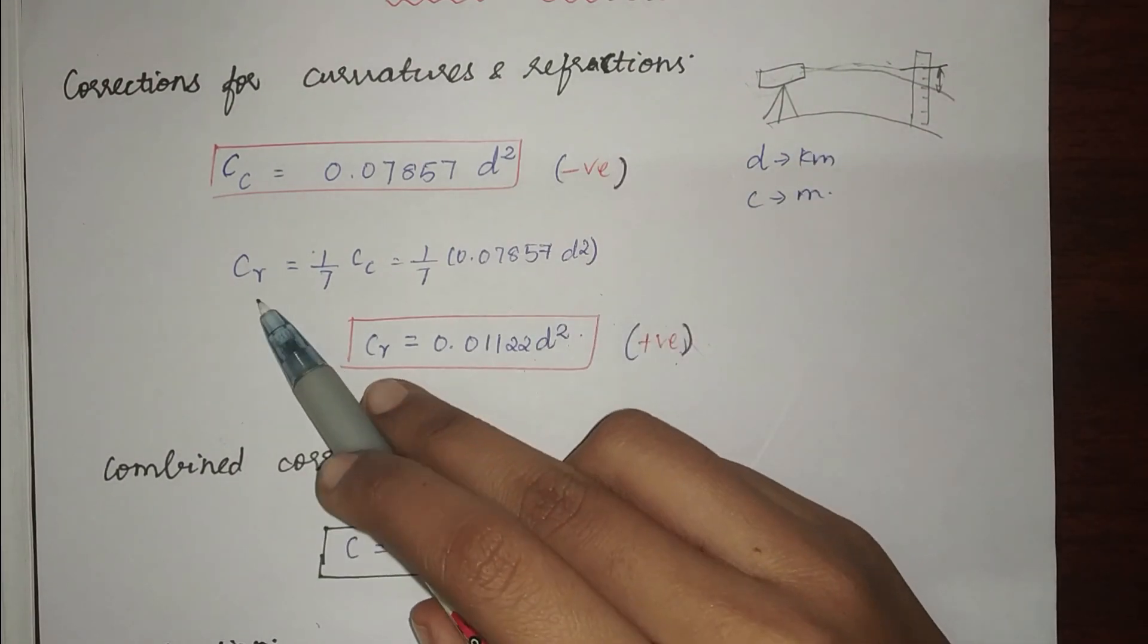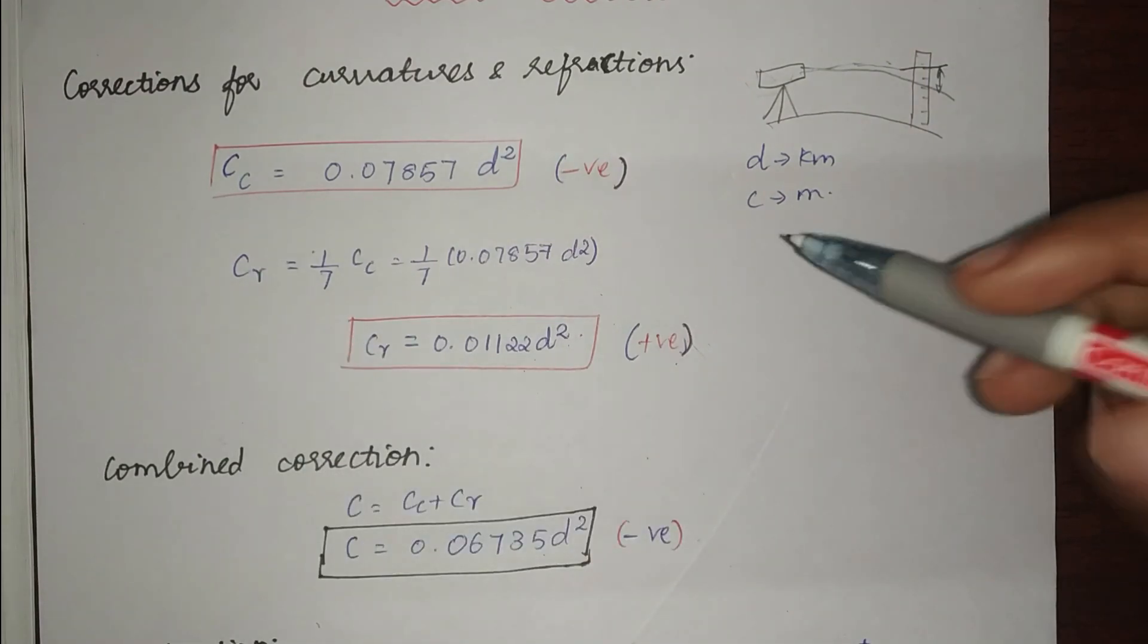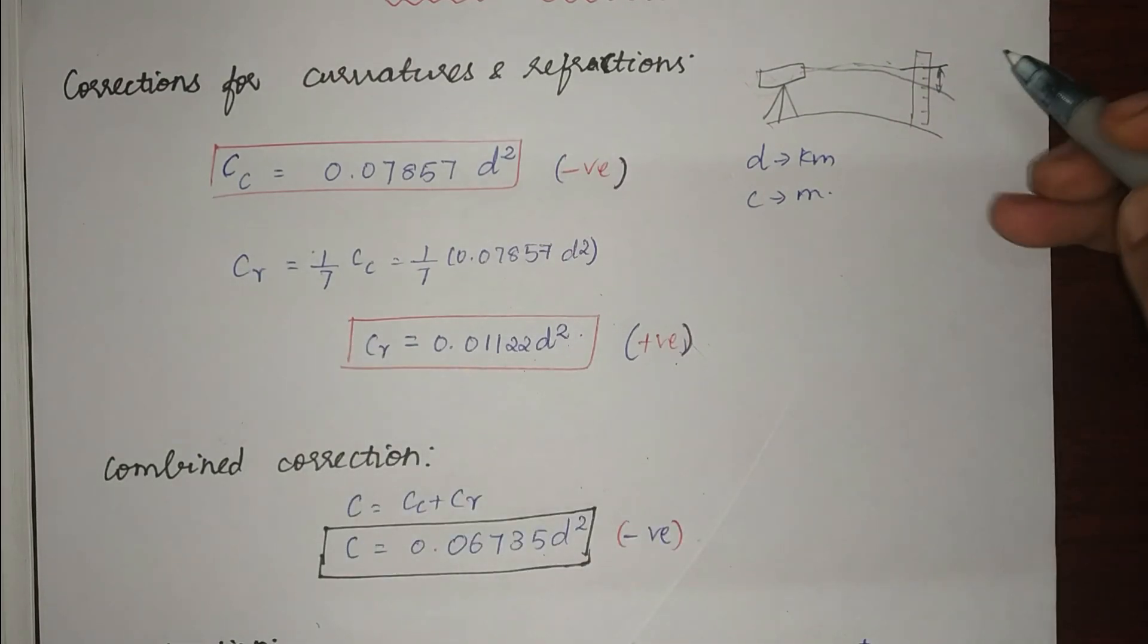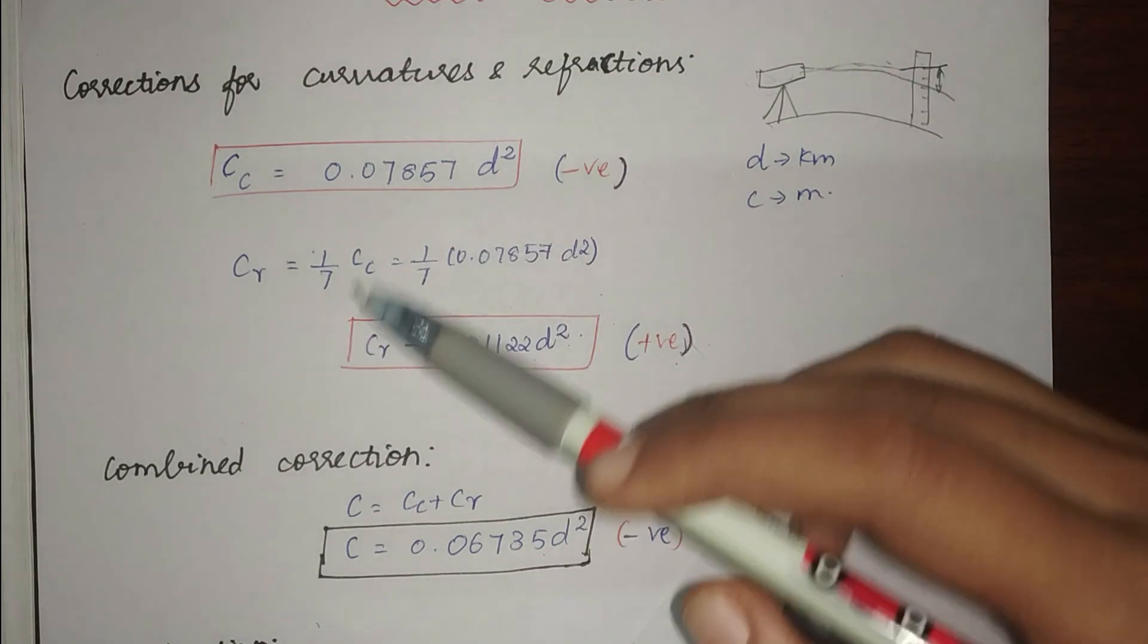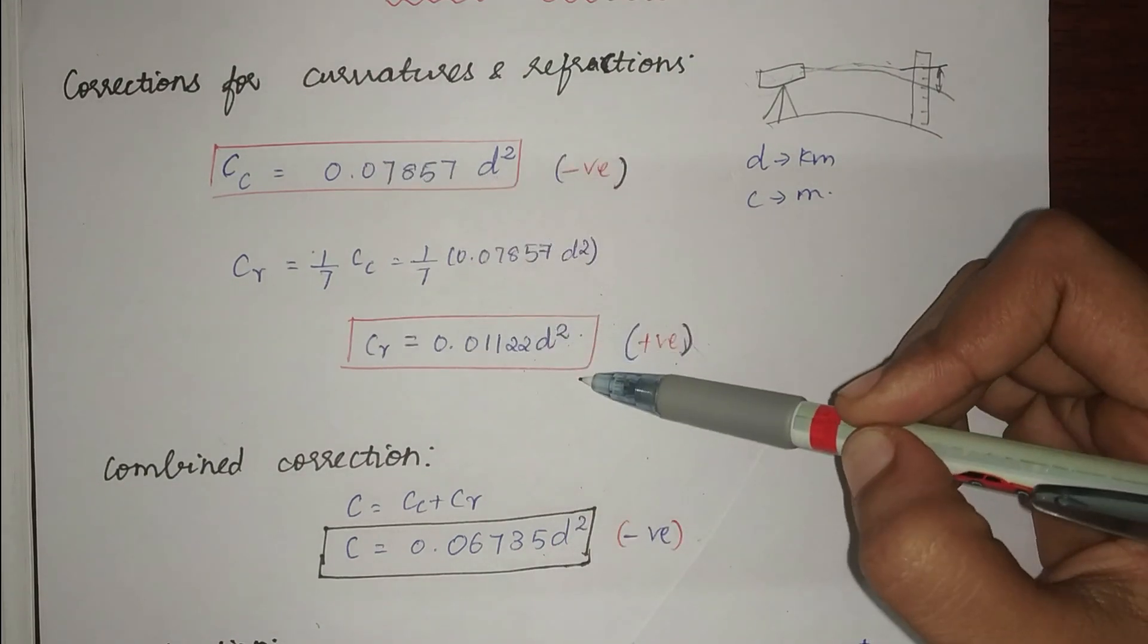And next correction due to refraction. We already know that whenever refraction happens, the answer that we get tends to be lesser than the original answer. So the correction has to be positive. So now we have correction for curvature and correction for refraction.